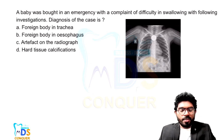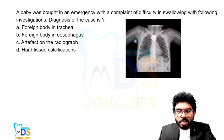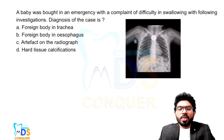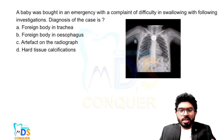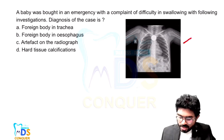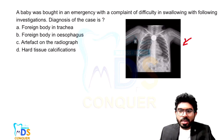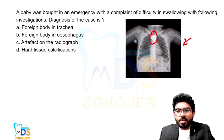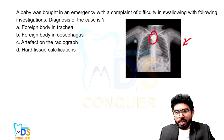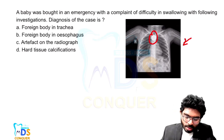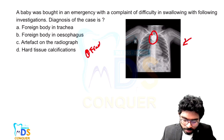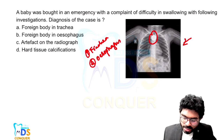Let's solve this question. A baby was brought into an emergency with a chief complaint of difficulty in swallowing, with the following investigation. The investigation given is a chest X-ray. On examination, you can see a radiopaque object present here. Assuming that the baby has swallowed a coin, you can see a coin-like radiopaque object on the chest X-ray. The coin can either move into the trachea or into the esophagus, and the chest X-ray is giving both options.